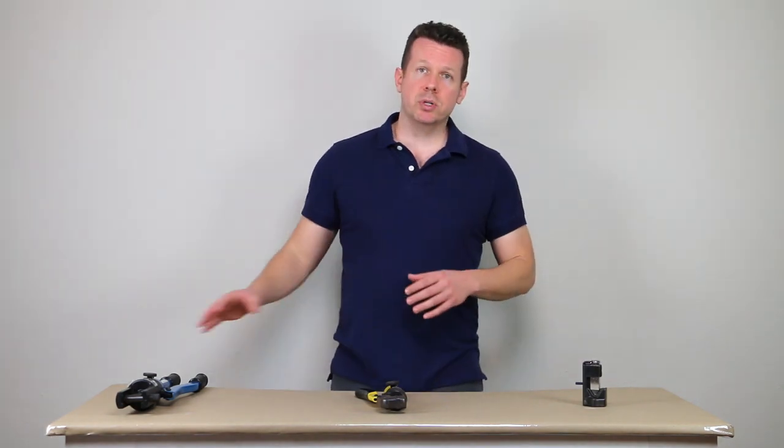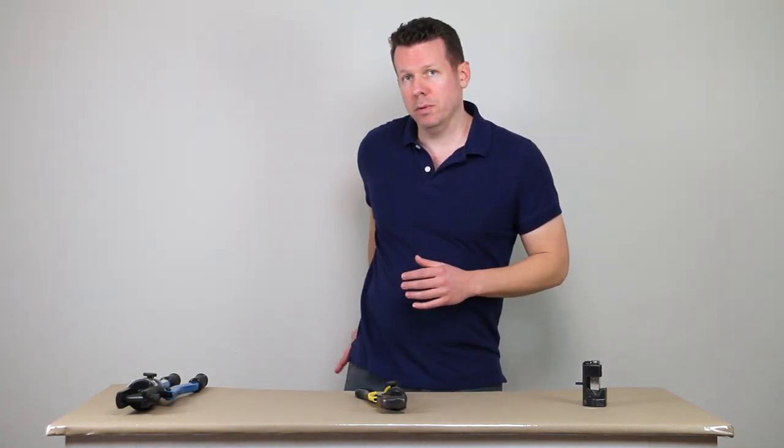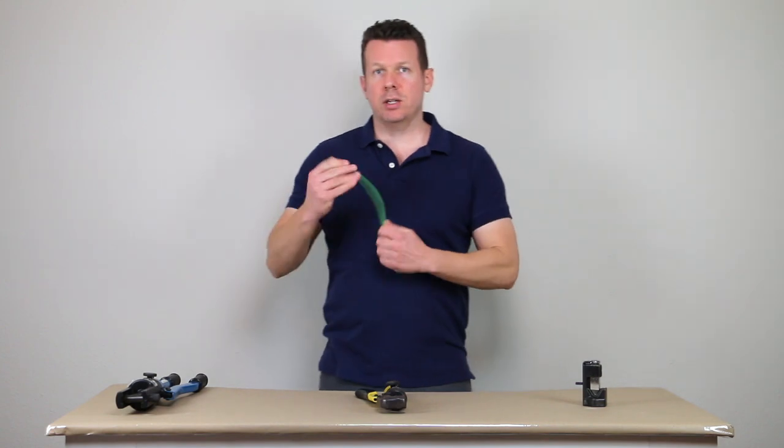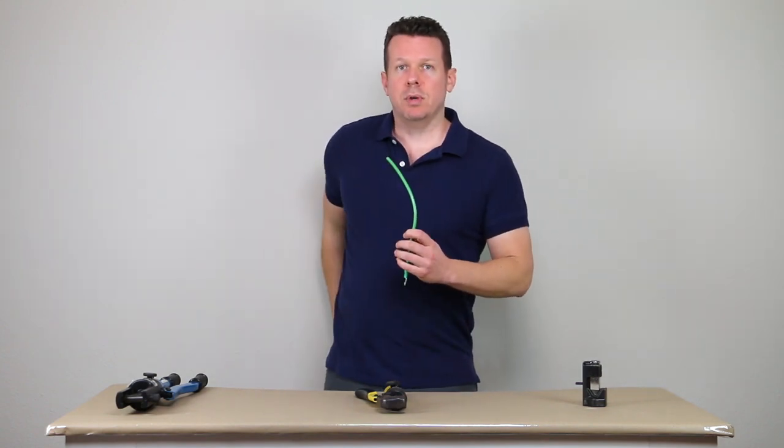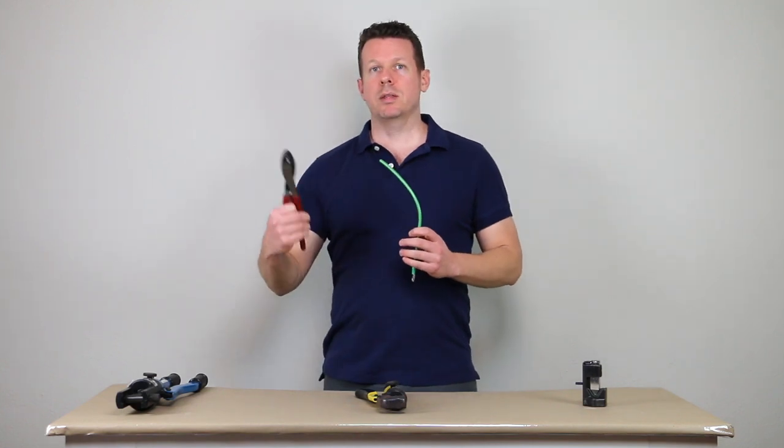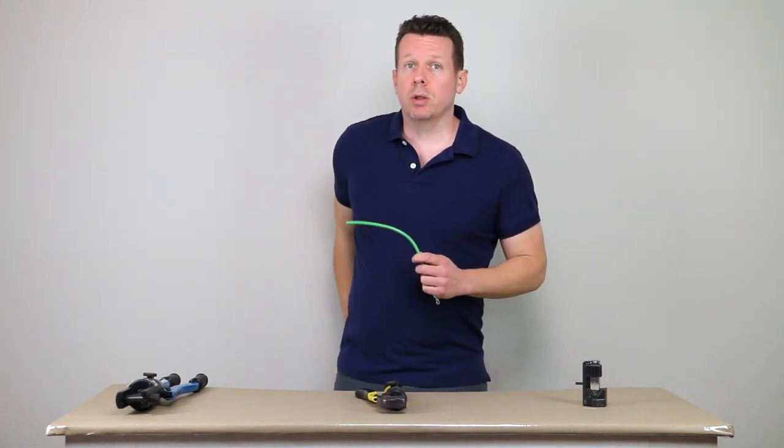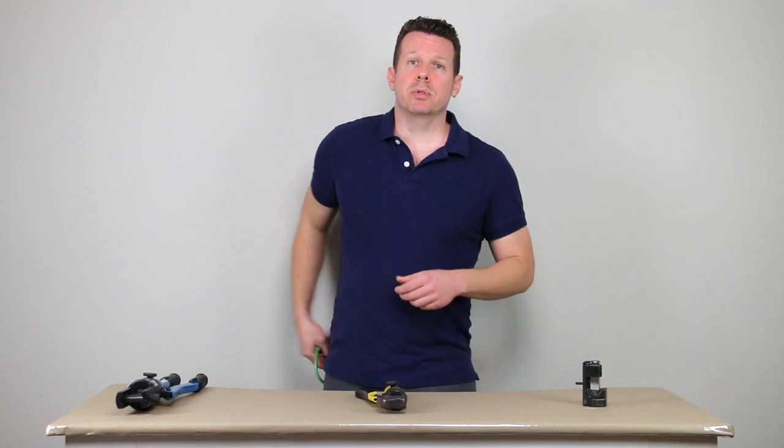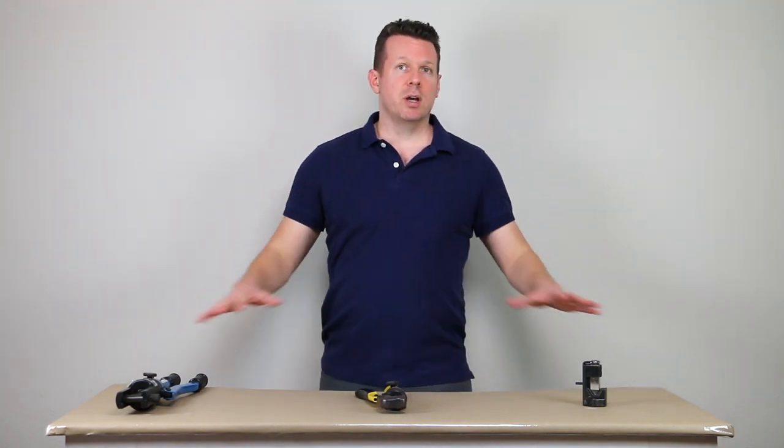We're going to take a look at three different crimpers that I've used over the years. I wanted to mention we're talking about essentially eight gauge cables and larger. This is an eight gauge cable and anything smaller than this, you can really do with a hand crimper. But once you get into the larger battery cables, alternator cables, we're going to need a more serious crimping force and that's where these come in.